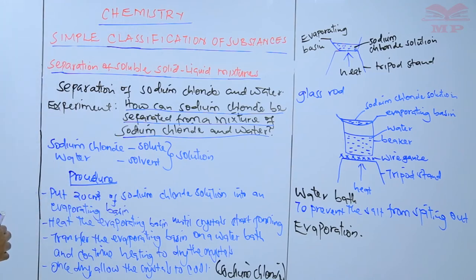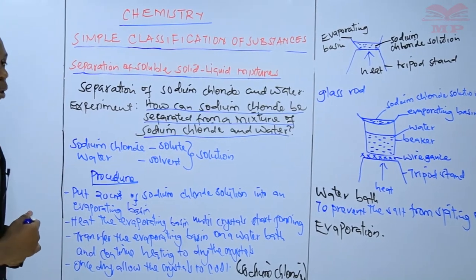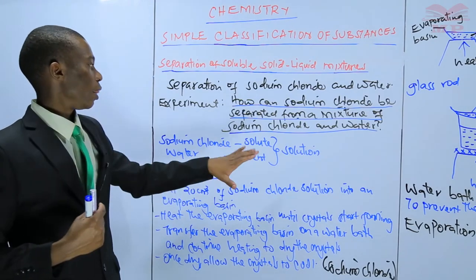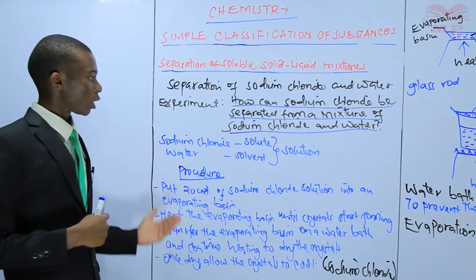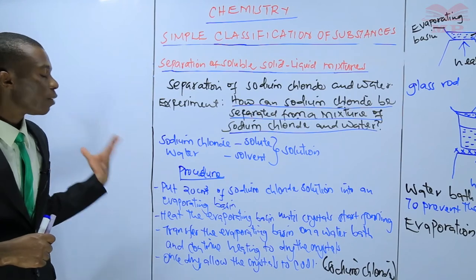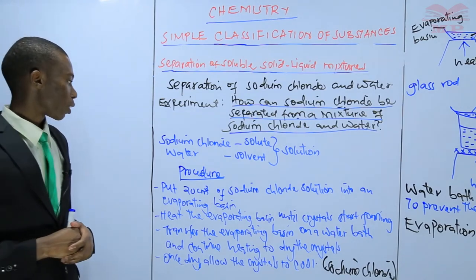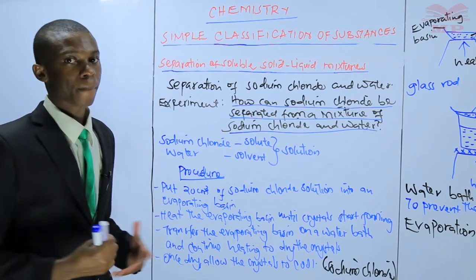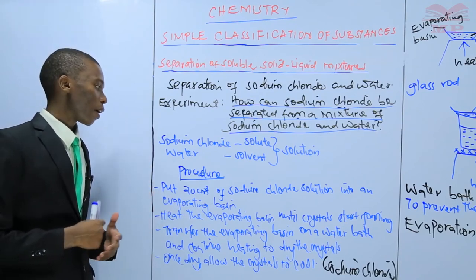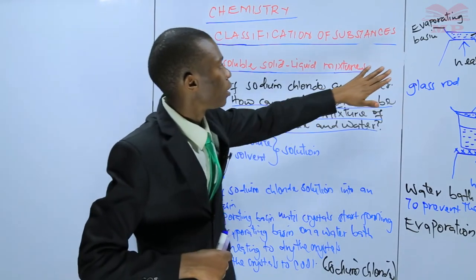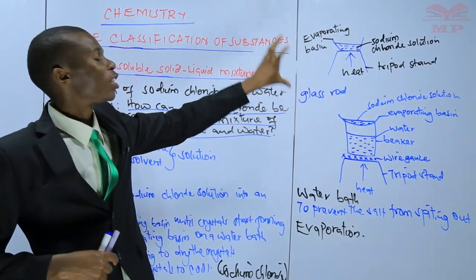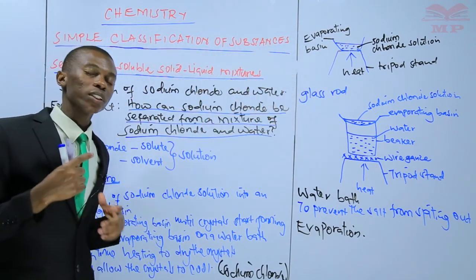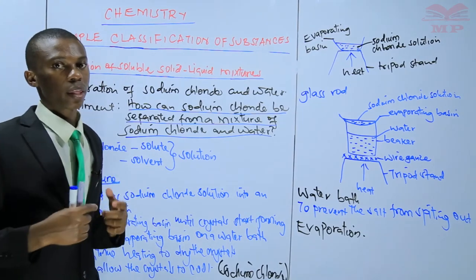Let's go through it again so you understand it better. Sodium chloride is the solute, water is the solvent, and the mixture of these two is a solution. You put 20 centimeters cubed of sodium chloride solution in an evaporating basin, as shown here. You heat the evaporating basin until crystals start forming. Once you heat it, water starts evaporating and you are left with sodium chloride.